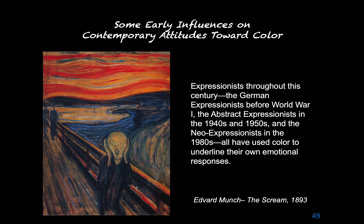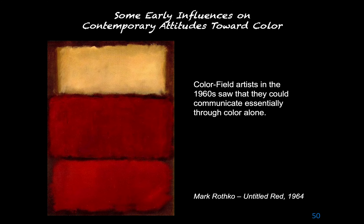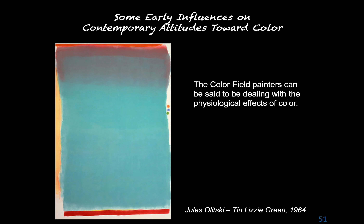Expressionists throughout the century — the German Expressionists before World War I, the Abstract Expressionists in the 1940s and 1950s, and the Neo-Expressionists in the 1980s — all used color to underline their own emotional responses, with strong contrasting colors applied in thick slashes and strokes. Color field artists in the 1960s saw they could communicate essentially through color alone, reducing formal means and depending on color to carry the weight of the work. The scale of their works is so large that the viewer's peripheral vision is encompassed — the viewer is absorbed by the expanse of color in a color field painting.